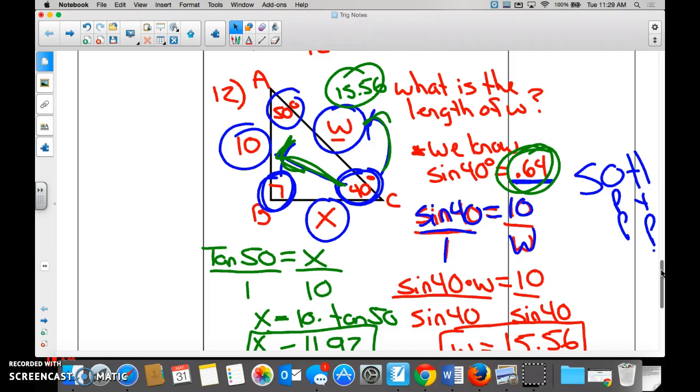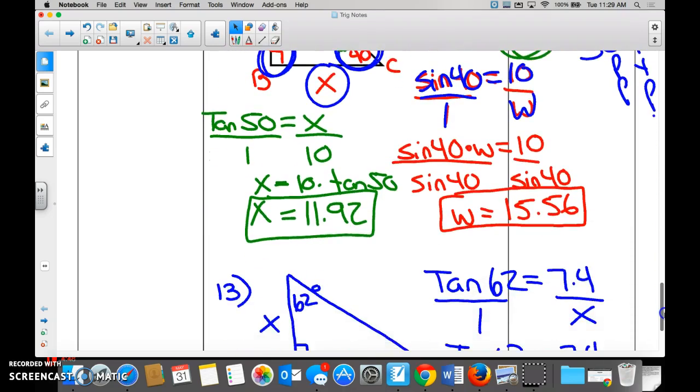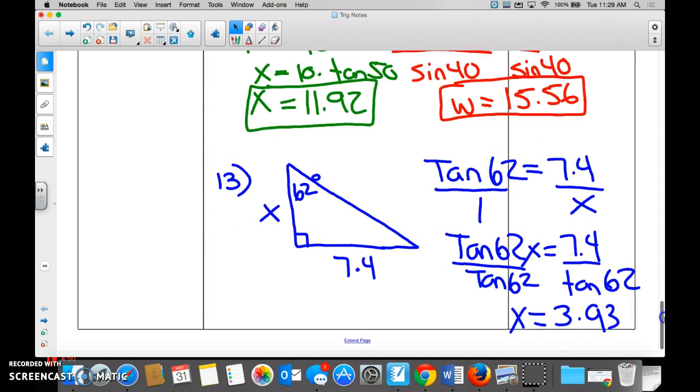We also did tangent. I'm going to skip over tangent. And then I'm going to skip over number 13, but we did another problem with number 13 in which we solved for our X or our missing side. Solving for whatever we have information to solve for. Okay, questions before I turn it off?